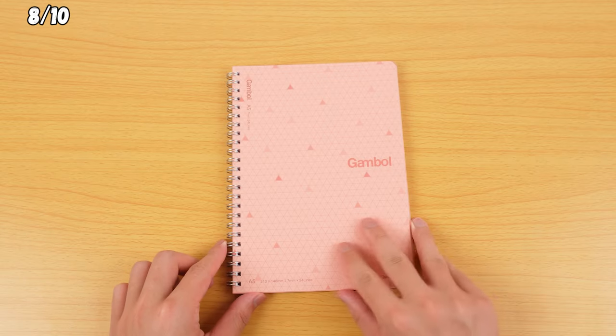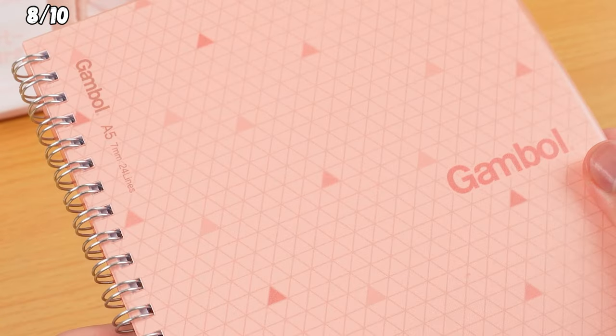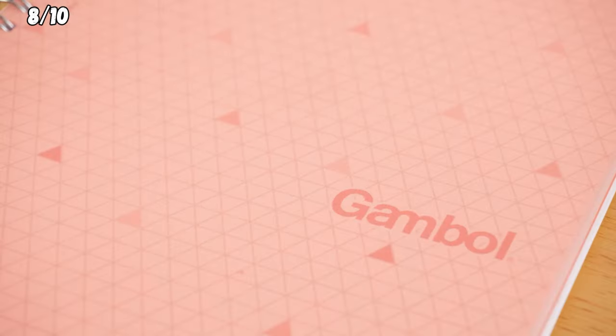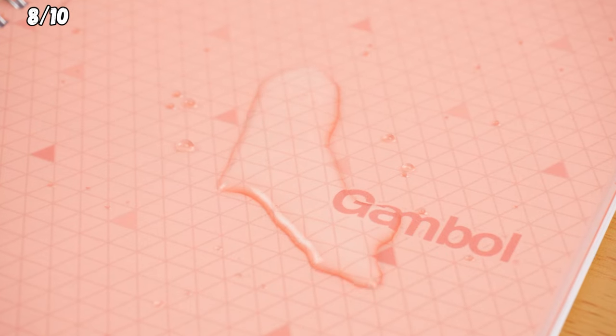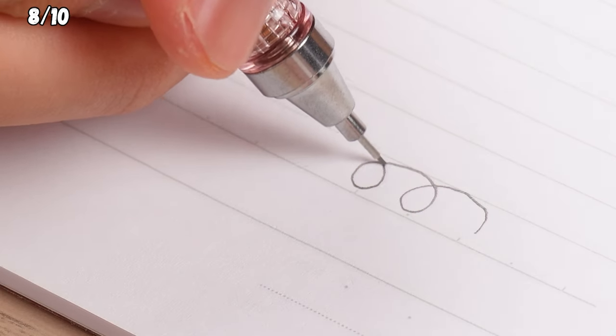Kokuyo Gamble Color Ring Notebook A5-7mm Ruled. It's as comfy to use as it is to look at. The soft cover has this satisfying matte feel, plus, it's waterproof. Inside, you've got that smooth paper, just like other Kokuyo notebooks, perfect for smooth writing with pencils or pens.